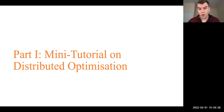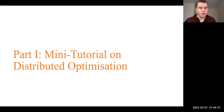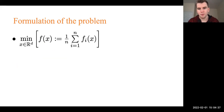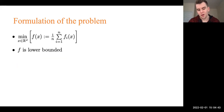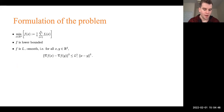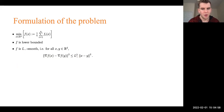Before moving to the details, I prepared a mini refresher tutorial on distributed optimization. We minimize the average of functions and assume that these functions are lower bounded and their Hessian is Lipschitz continuous — we say it's L-minus smooth. L-minus is our notation, which will become clearer later because we will introduce more related constants.